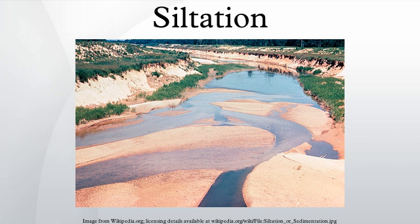Mitigation: In rural areas the first line of defense is to maintain land cover and prevent soil erosion in the first place. The second line of defense is to trap the material before it reaches the stream network. In urban areas the defense is to keep land uncovered for as short a time as possible during construction, and to use silt screens to prevent the sediment from getting released in water bodies.